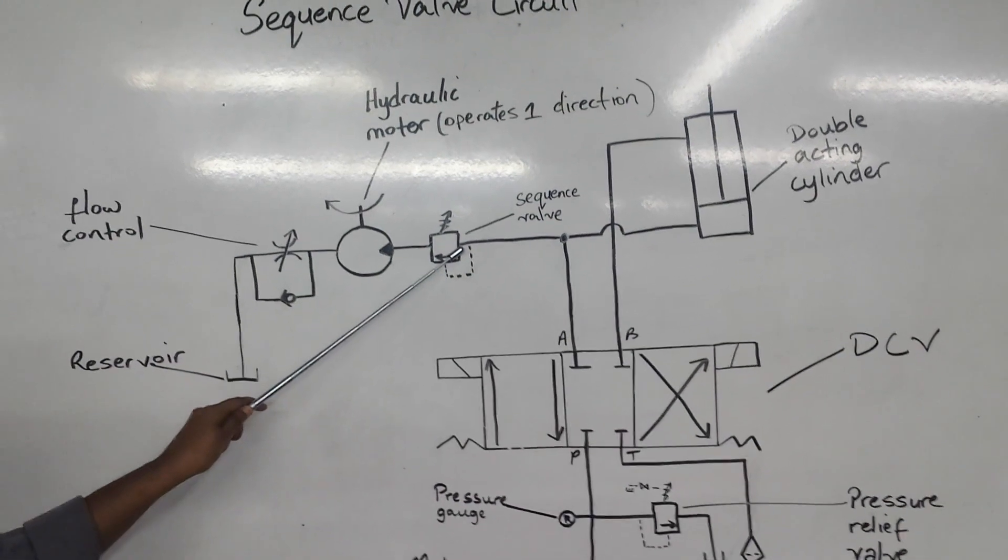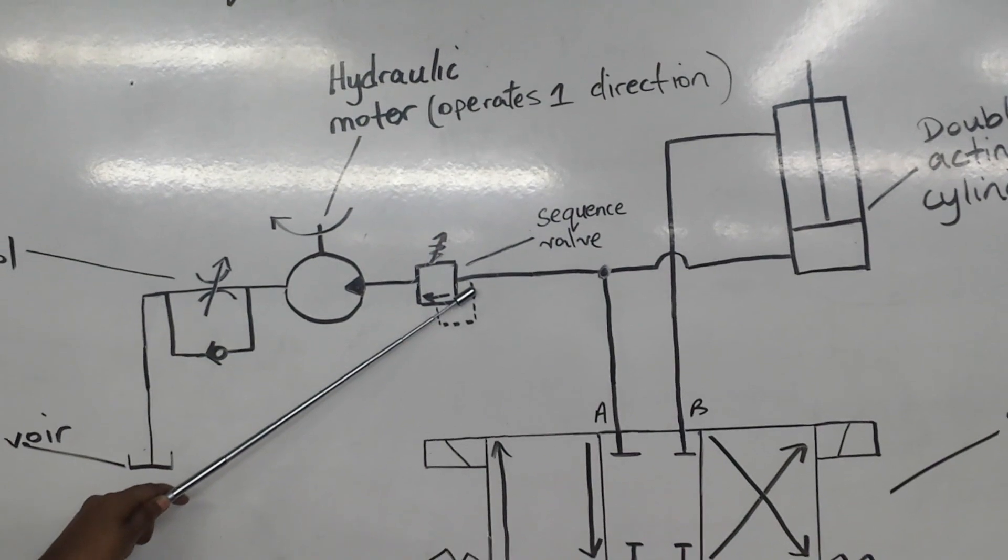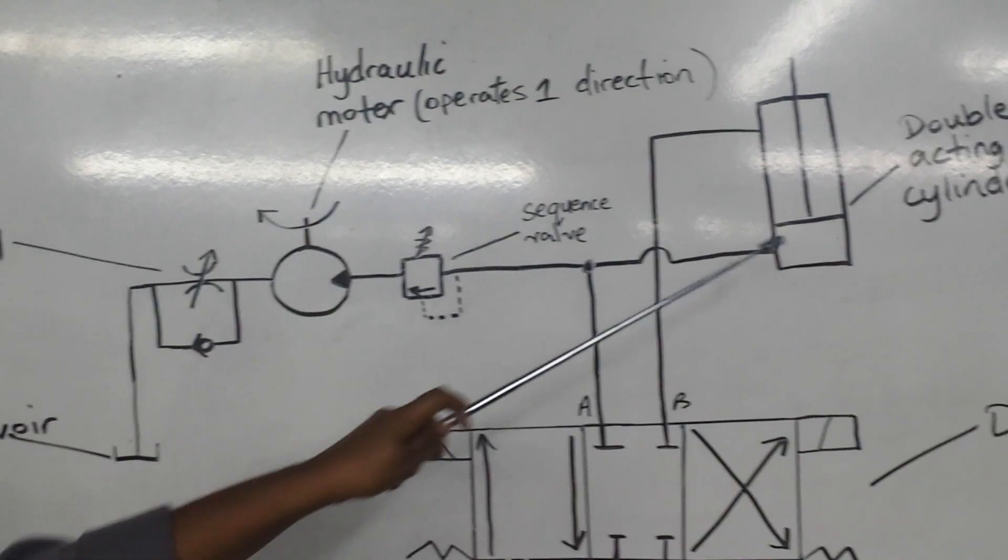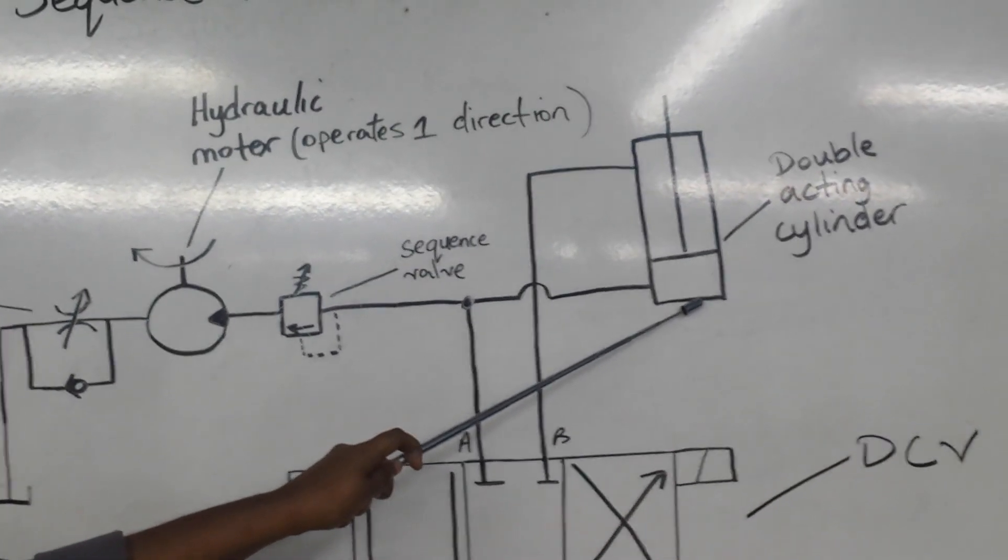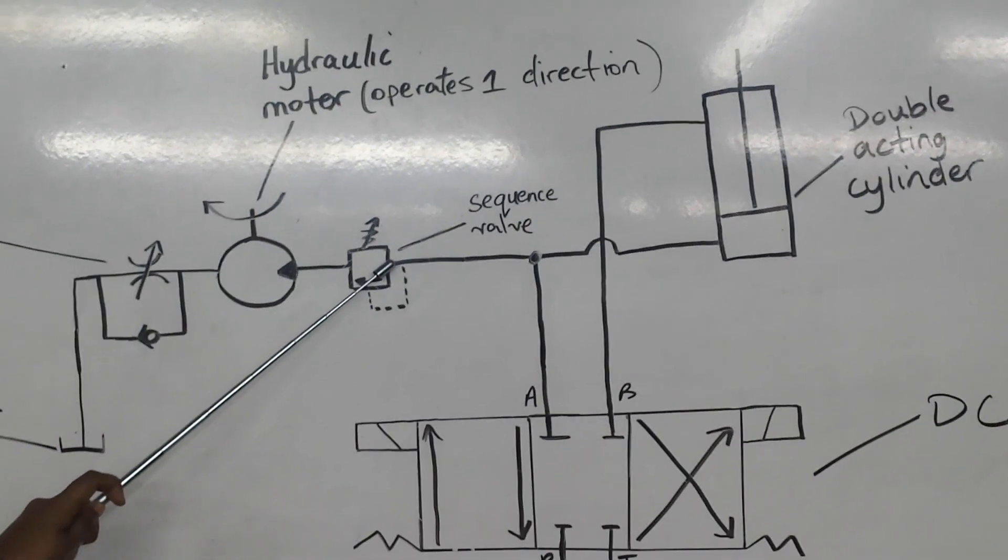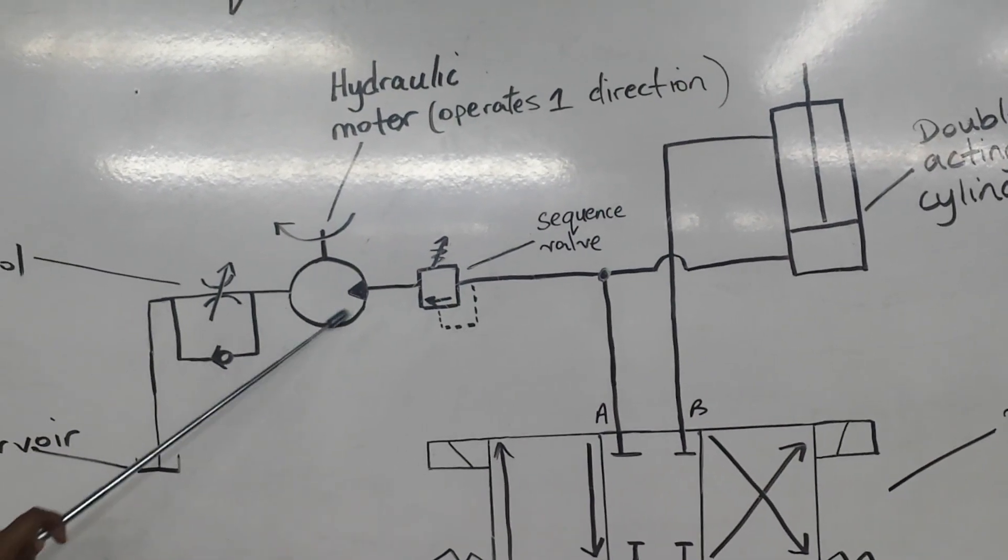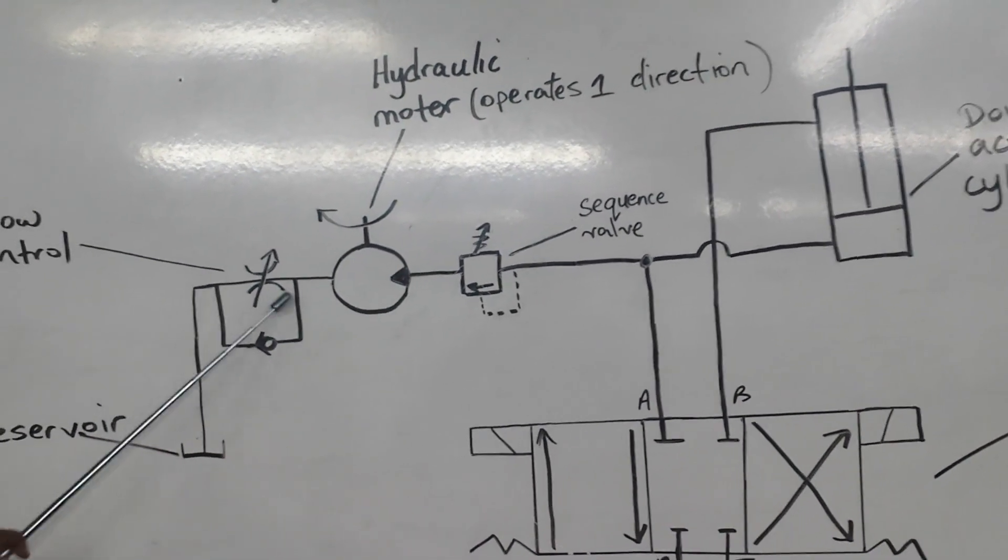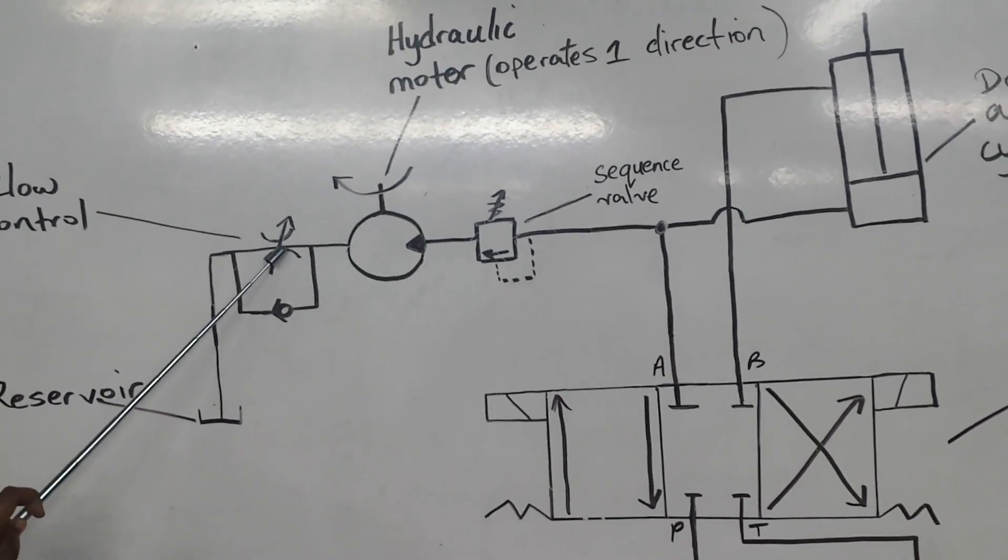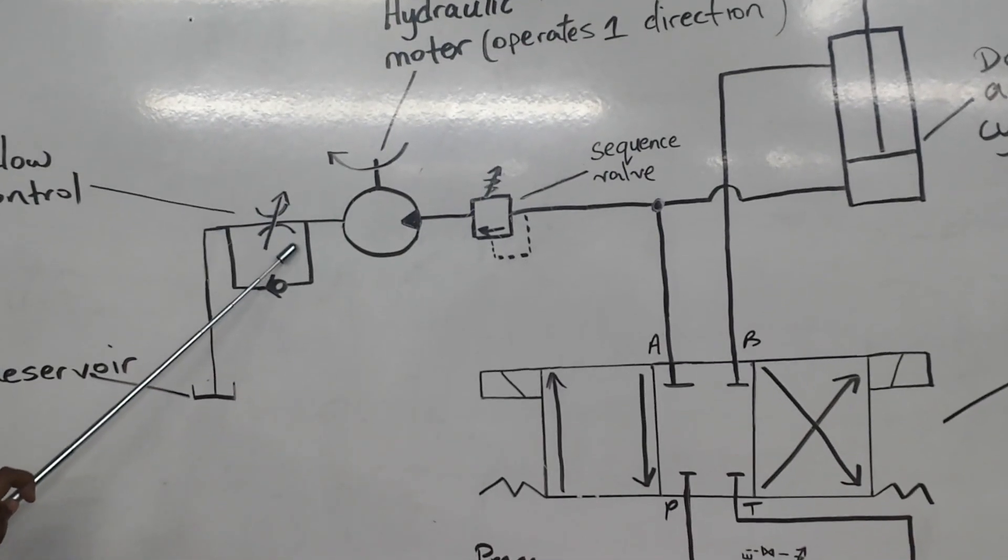The sequence valve controls the operating sequence between two branches of a circuit. The valves are commonly used to regulate an operating sequence of two separate valve actuators. When the cylinder begins to extend, the sequence valve reaches the preset amount. The sequence valve opens, allowing flow to enter the hydraulic motor to the flow control and then back to the reservoir. A flow control is also called a meter out circuit to control the exhaust flow of the motor to prevent overspeed.